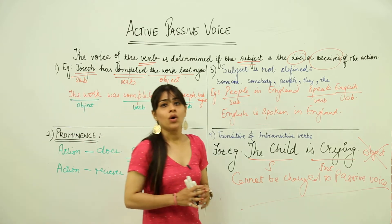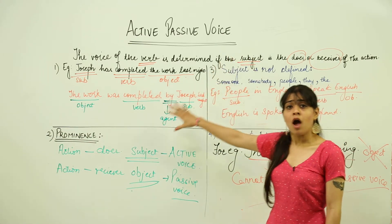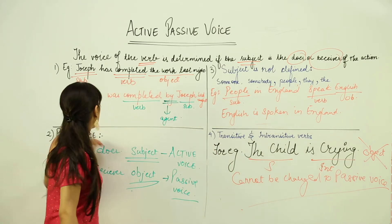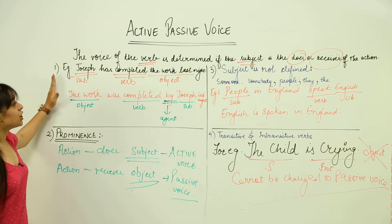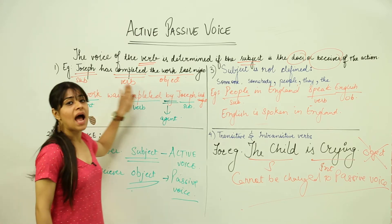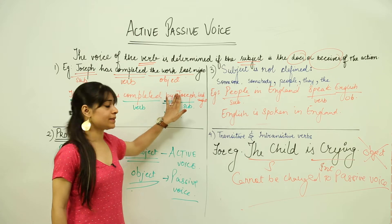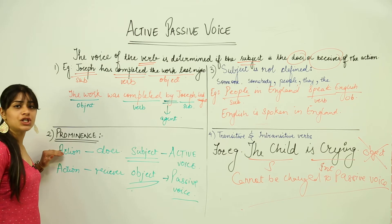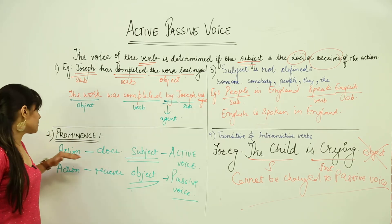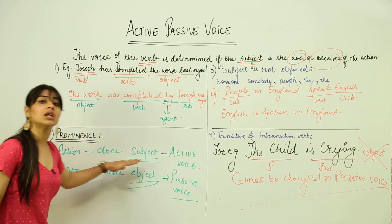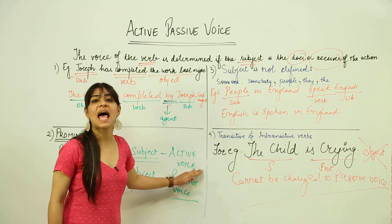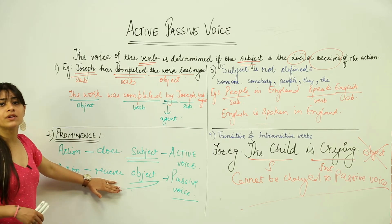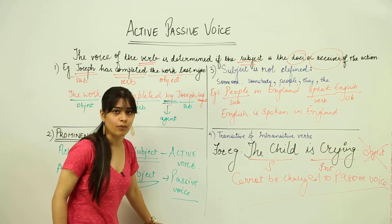Now let's revise from the beginning. To convert from active to passive voice, certain things must be kept in mind. First, we need a subject, a verb, and an object in the sentence. Then we look at the prominence of the subject or the doer. If the subject is prominent, it automatically becomes active voice. But if the action is received by the object, it becomes passive voice.